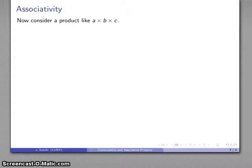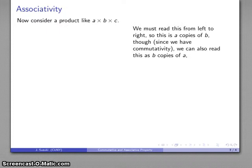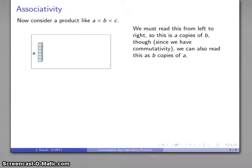Now, there's another important property. Consider a triple product, A times B times C. We must read this from left to right. So this is A copies of B. And then, because of commutativity though, A copies of B is the same as B copies of A. So here's my A copies of B. I can read this as B copies of A.